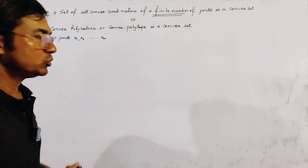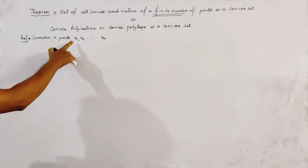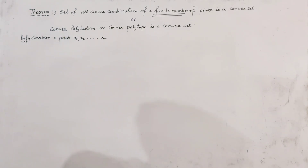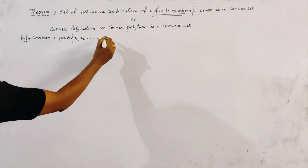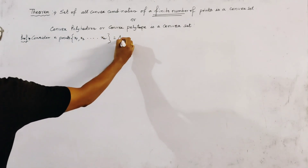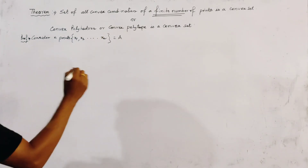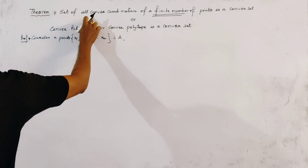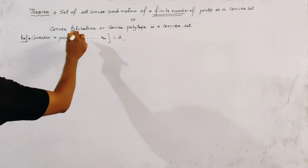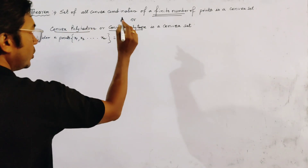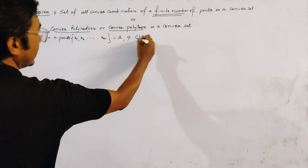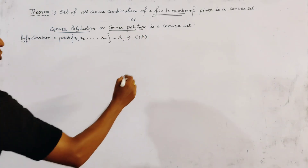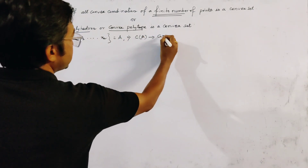Now we are going to the proof of this theorem. To prove this theorem, we consider n points namely x1, x2 to xn. Let the set of these points be equal to capital A. We know that the convex combination of this set, which is known as the convex polyhedron or convex polytope, is denoted by C of A. Now we have to show that C of A is a convex set.